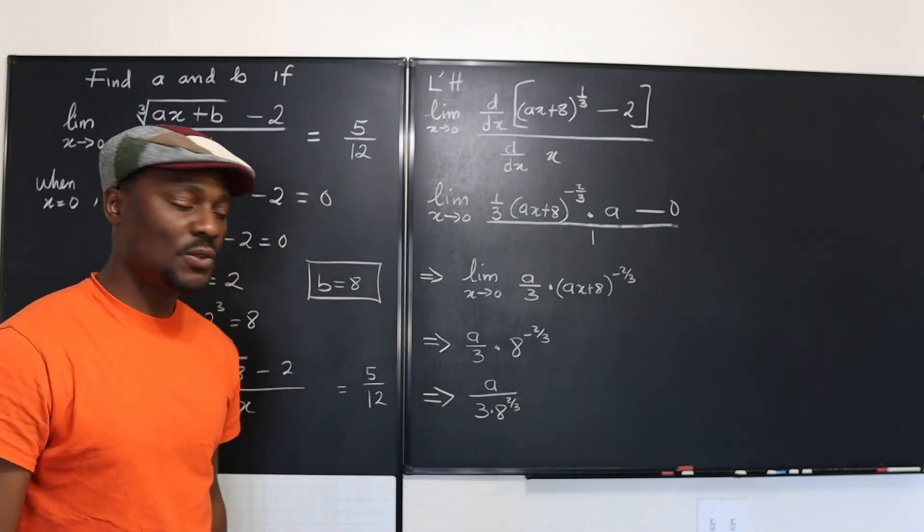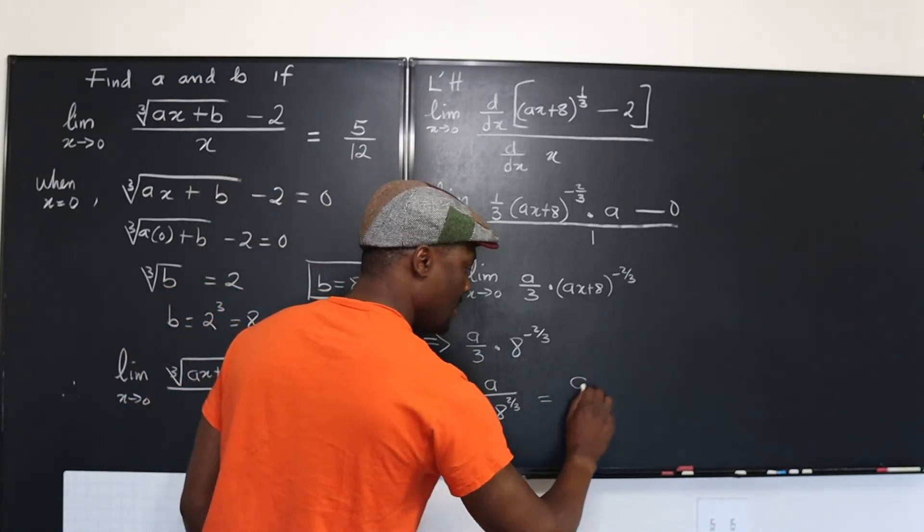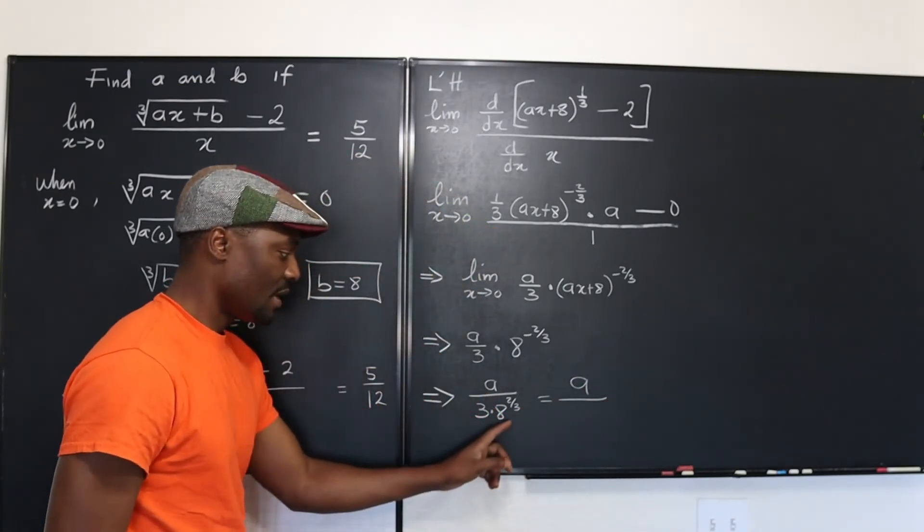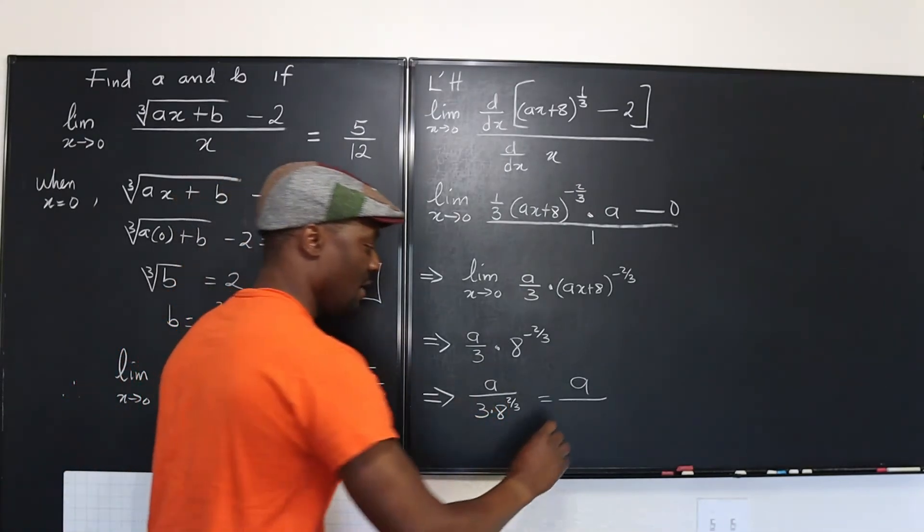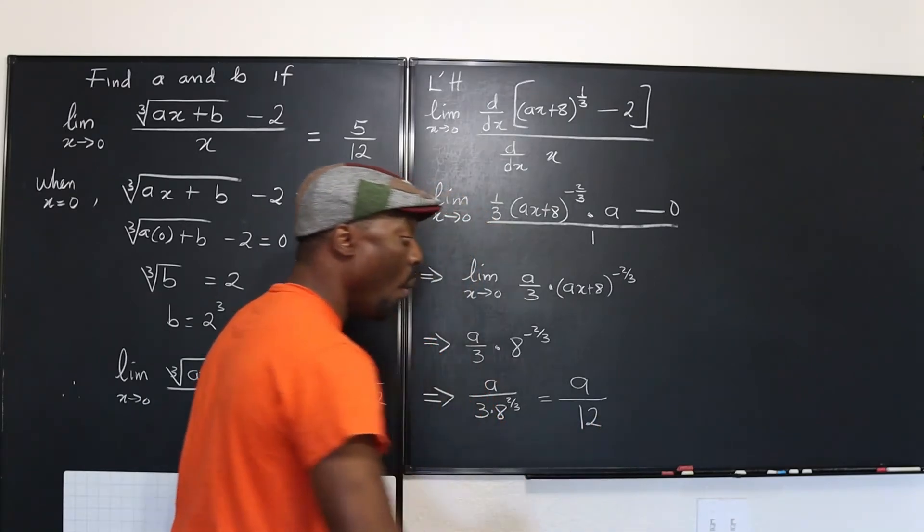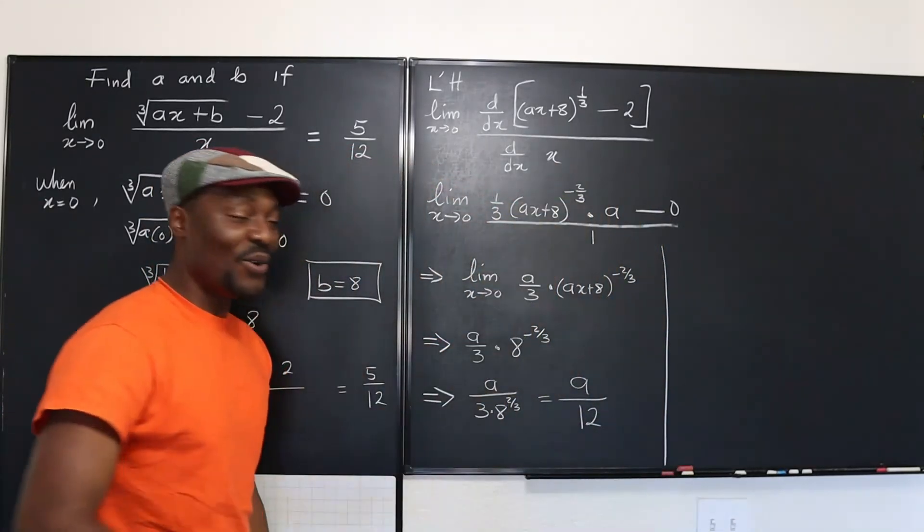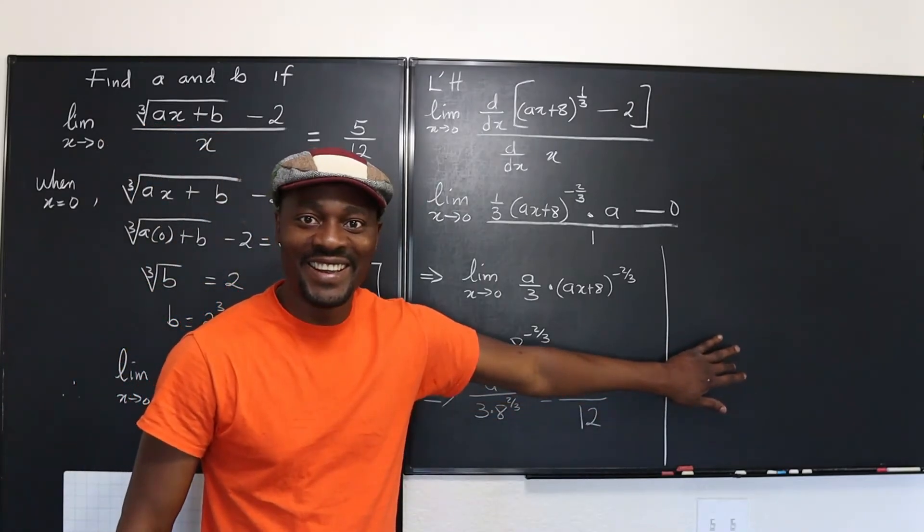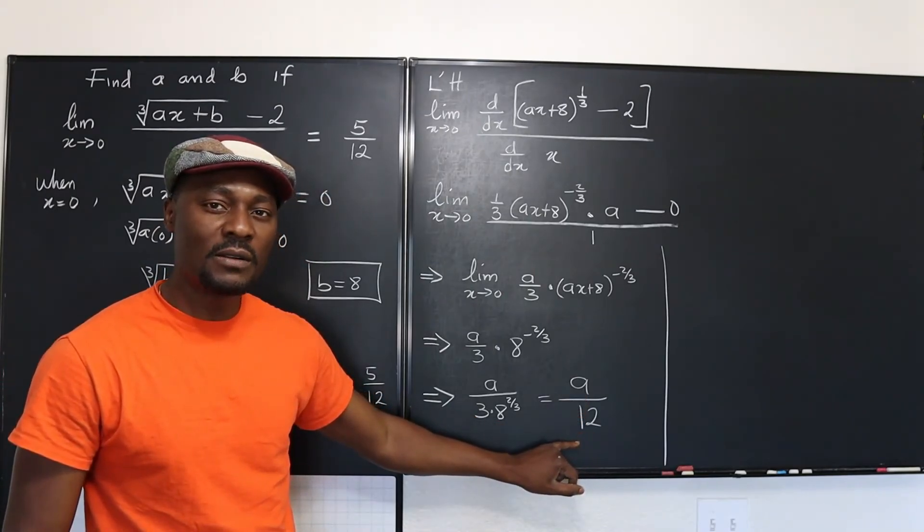Well, what is eight to the two thirds? That's going to be equal to A over, cube root of eight is two. When you square it, it's four. Four times three gives you 12. Oh, did you see that? I'm just going to finish this here. Okay, did you see that? So the limit we just took is A over 12.